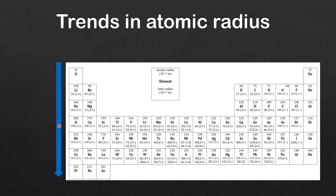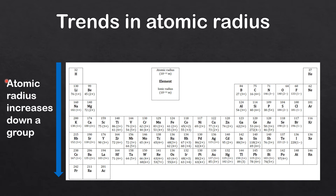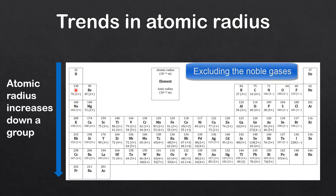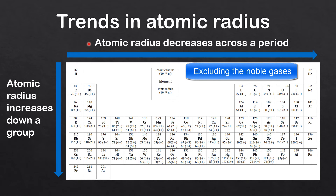The general trend in the periodic table is that atomic radius increases down a group. Looking at the trend across a period, starting with period two from lithium through beryllium, boron, carbon, nitrogen, oxygen, and fluorine, you can see that as you go from left to right across a period the atomic radius decreases. So the general trend is atomic radius decreases across a period.